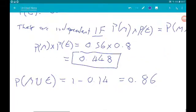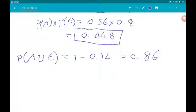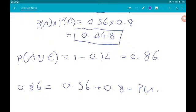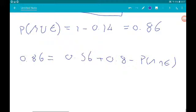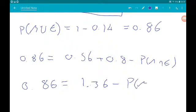So we now know that 0.86 is equal to the Probability of Passing Maths, so 0.56, plus the Probability of Passing English, 0.8, minus the Intersection. So 0.86 is equal to 1.36 minus the Intersection.